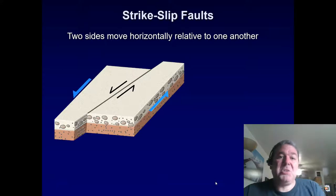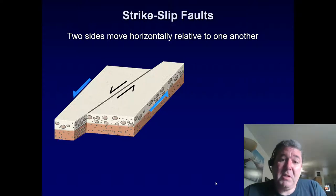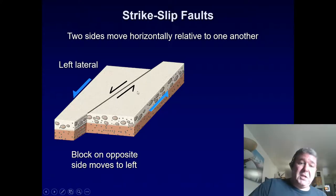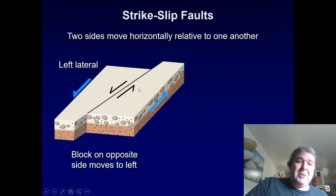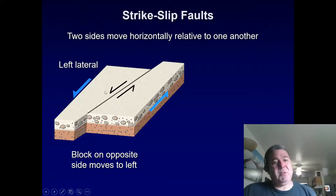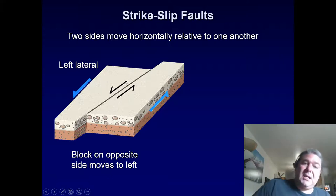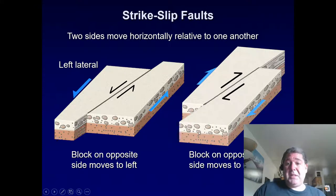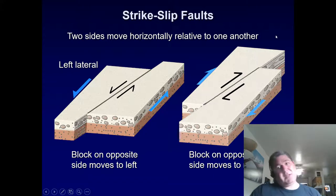Strike-slip faults are described as left-lateral or right-lateral. If you stand on one side of the fault and look across, which way does the other side appear to have moved? If it looks like it moved left, it's left-lateral; right-lateral is the opposite, where it appears to have moved to the right.